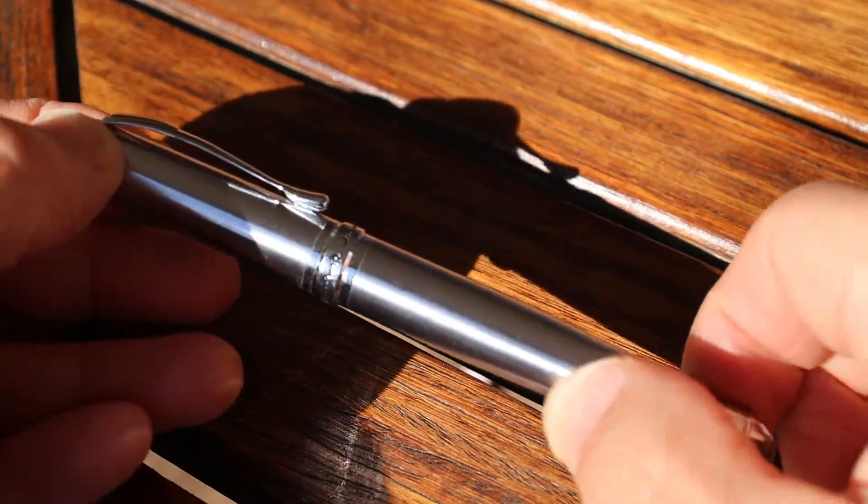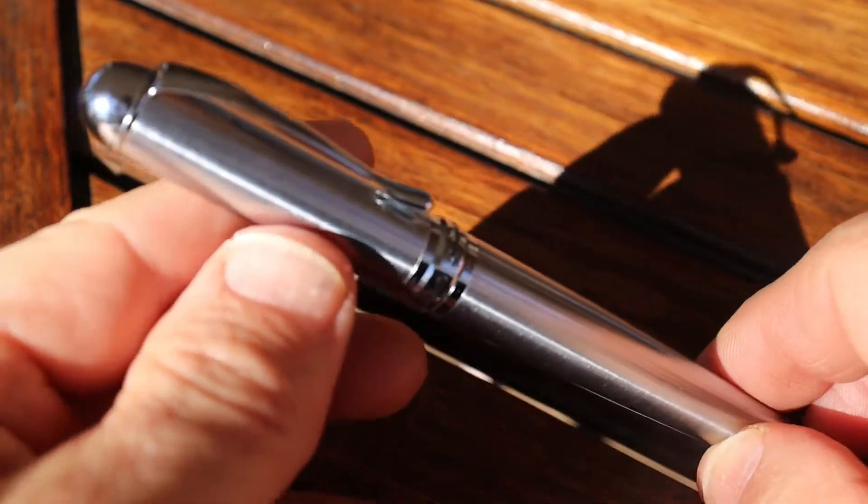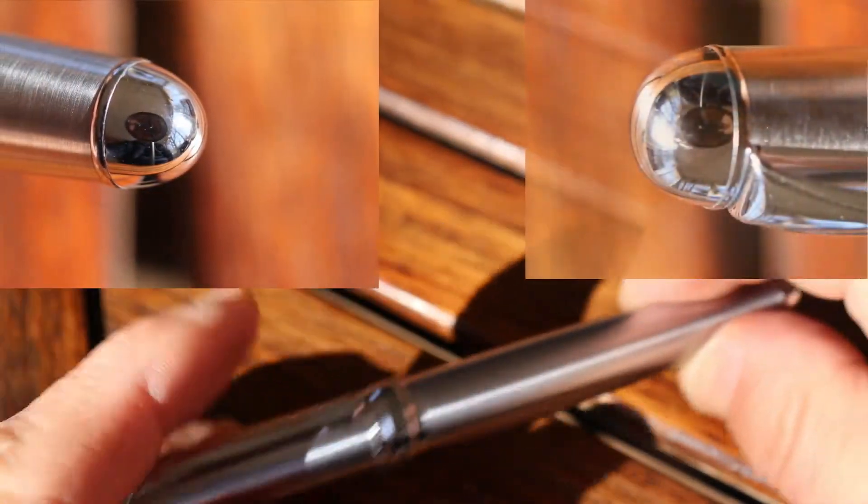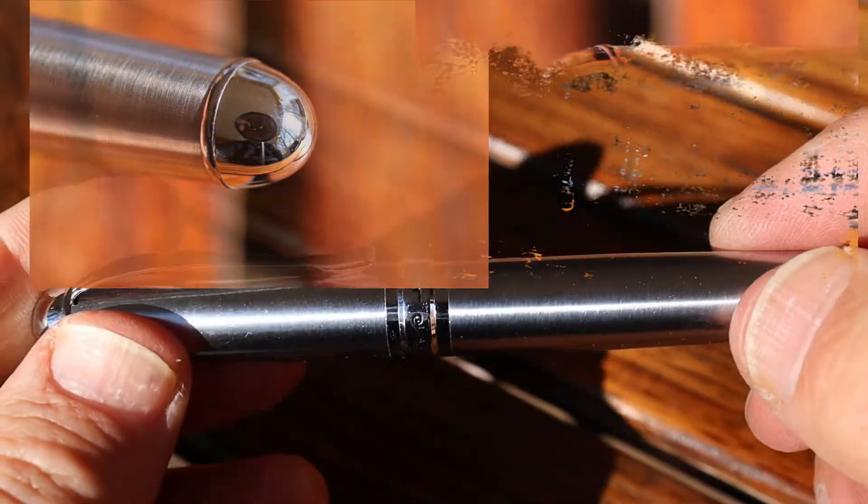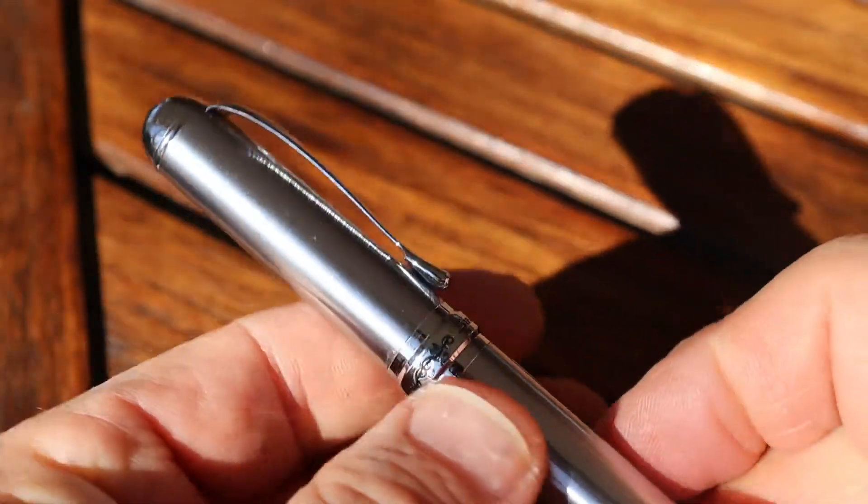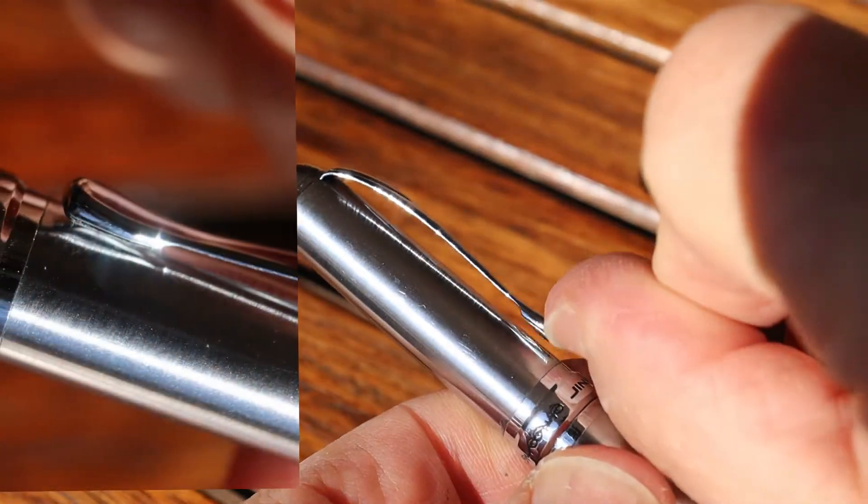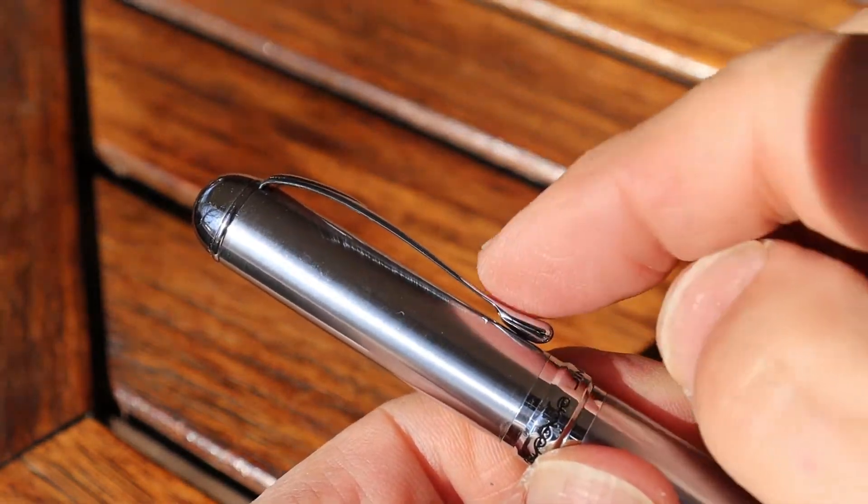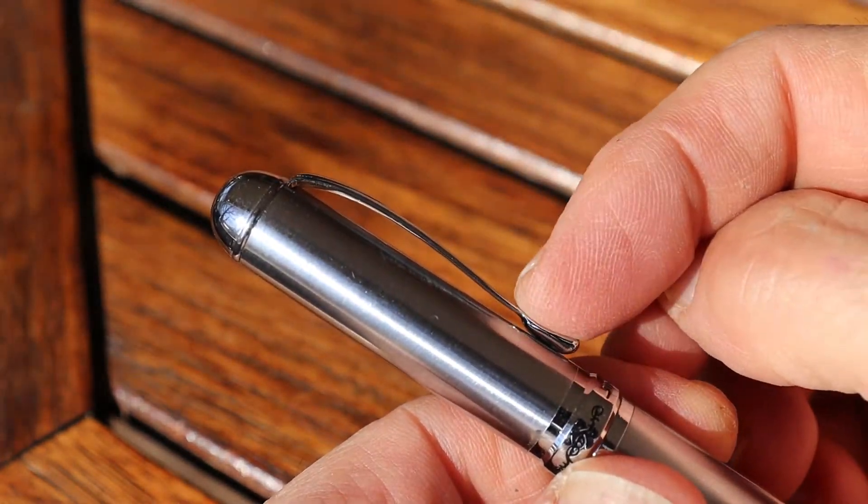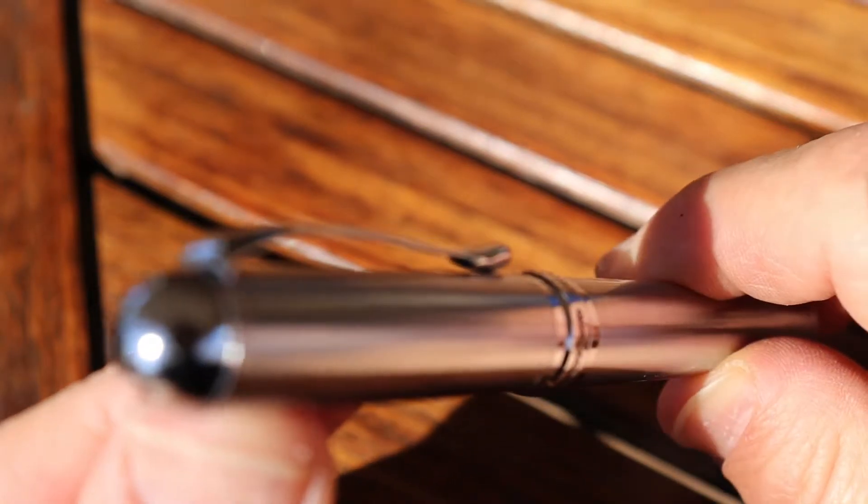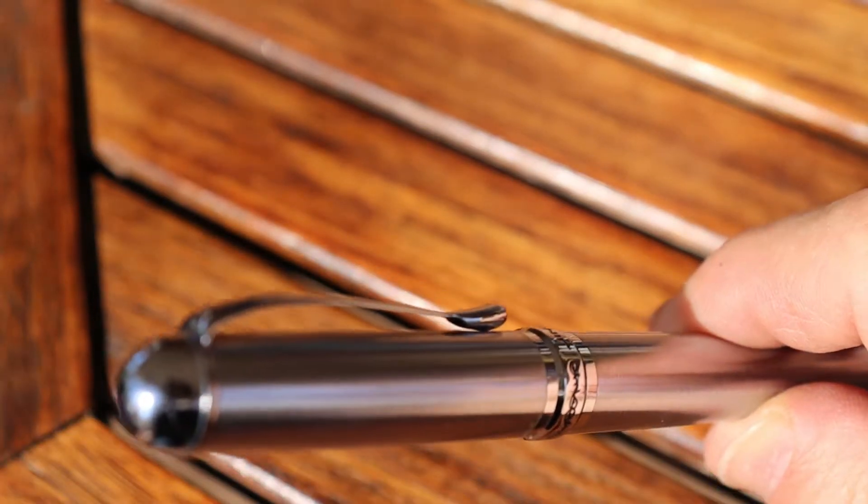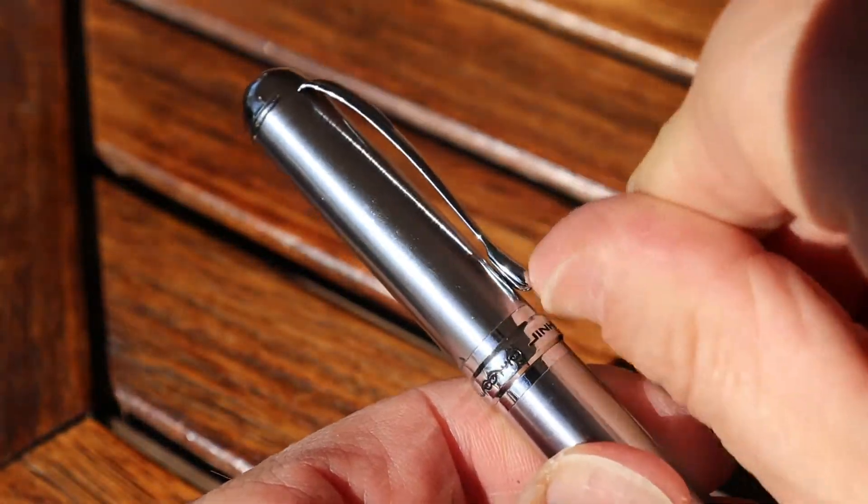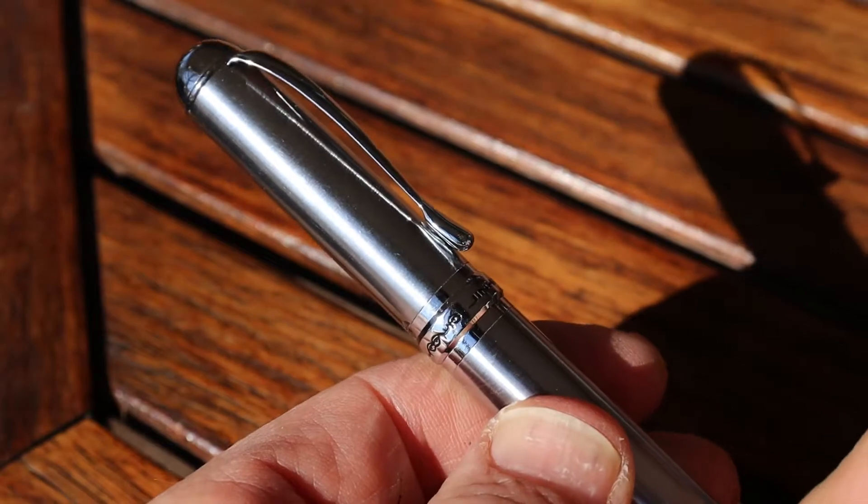I'll call this a brushed chrome. You have the chrome finials there and then the chrome clip. The clip is plenty tight enough, I like it. It's hollow but it's smooth so it'll go into a pocket or on a strap easily enough.